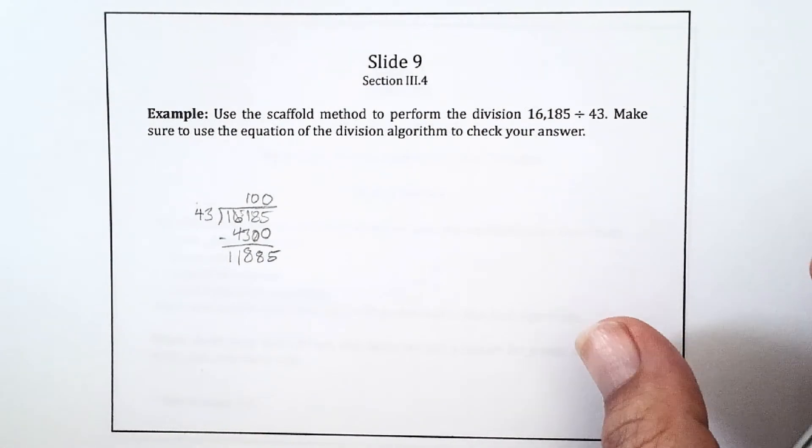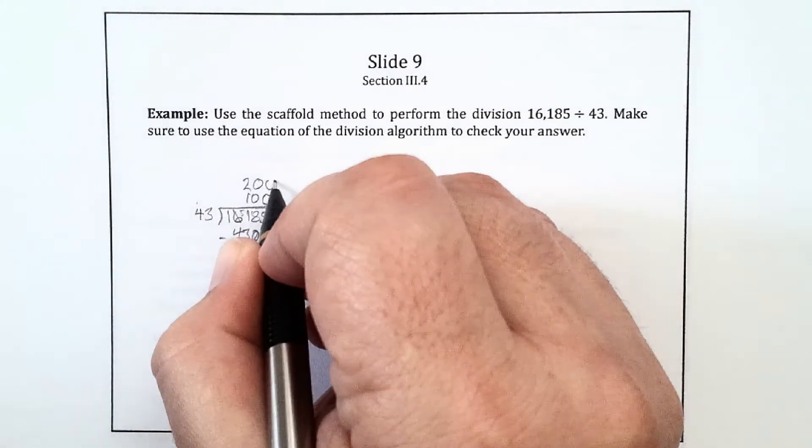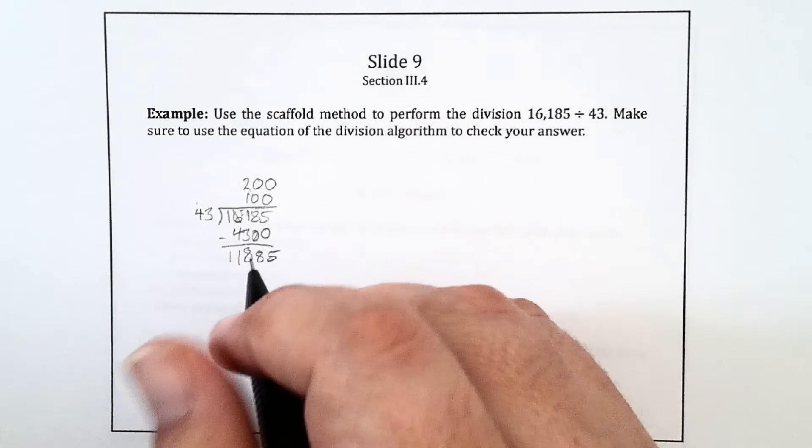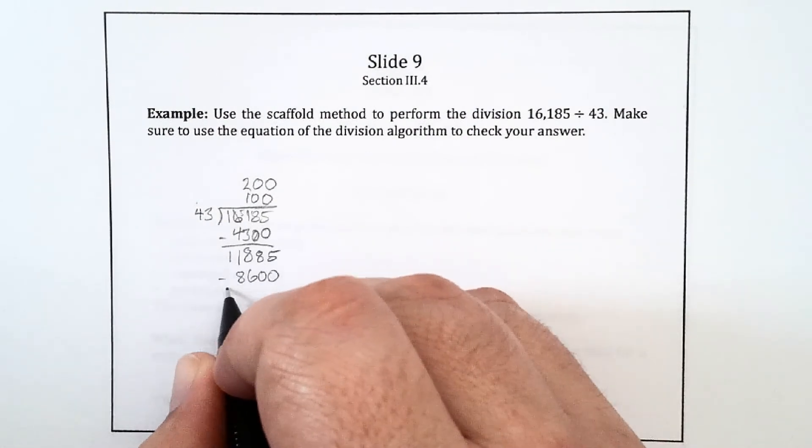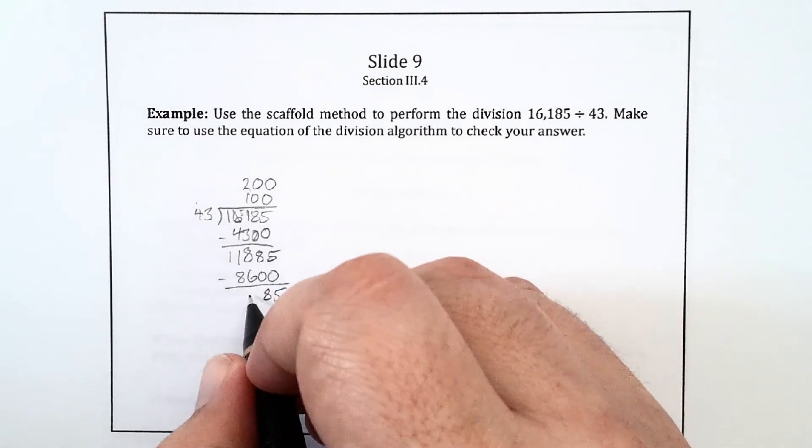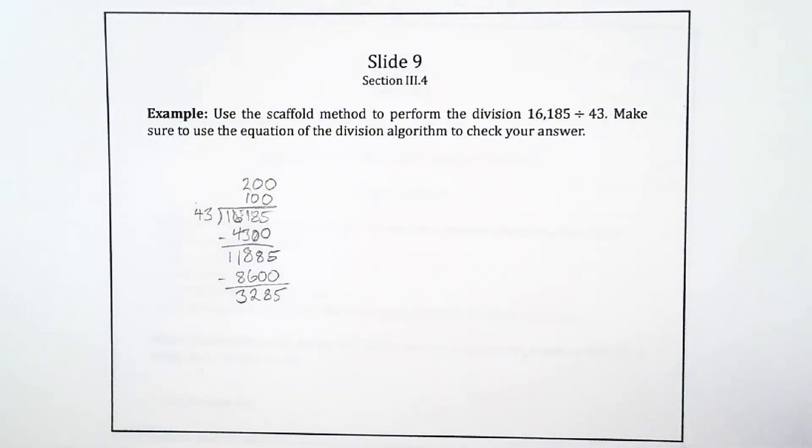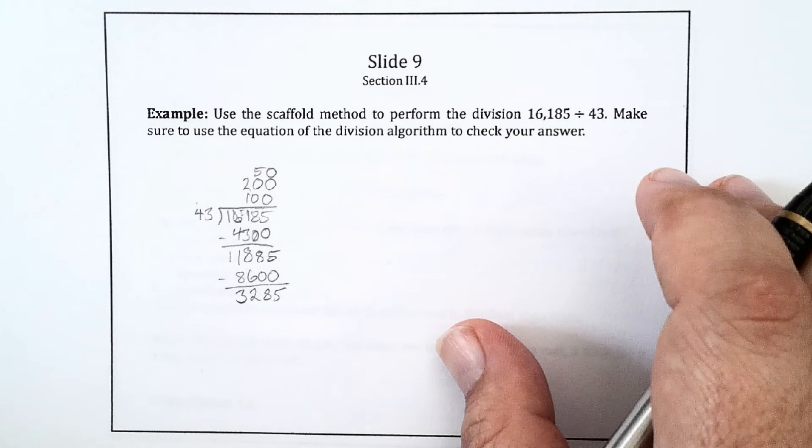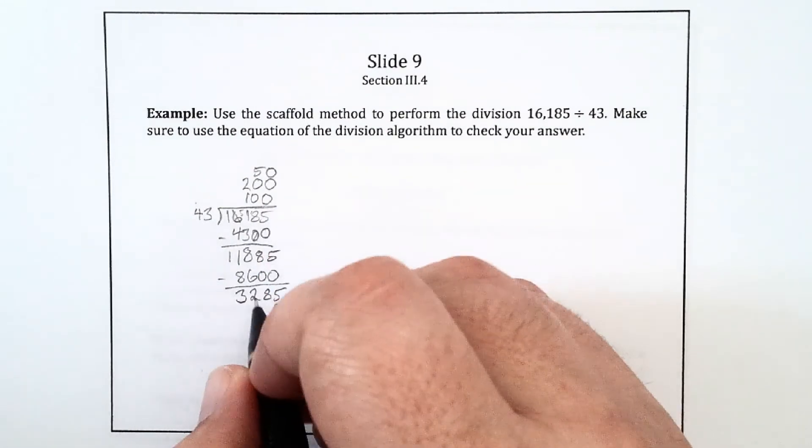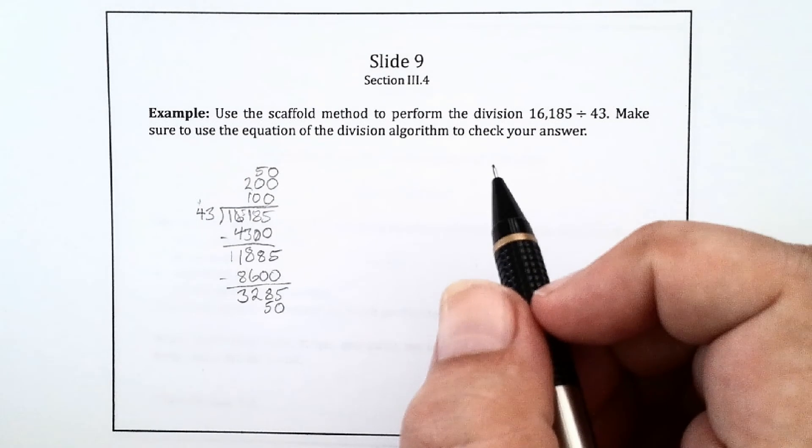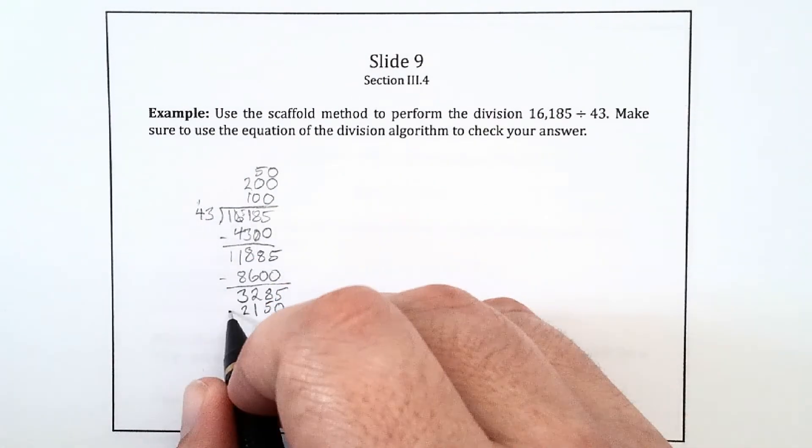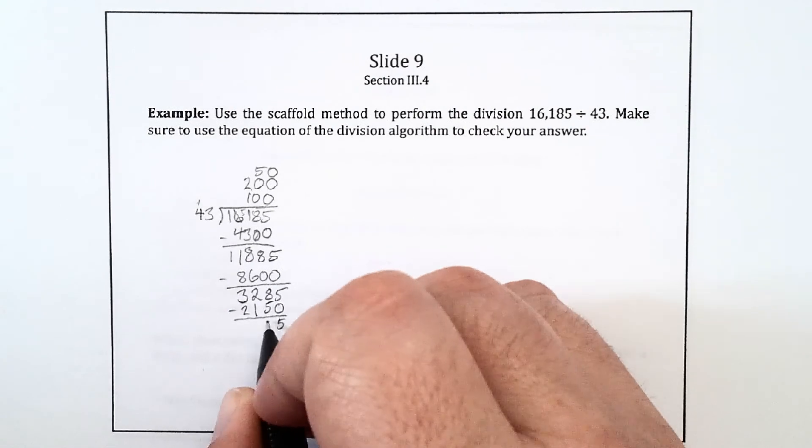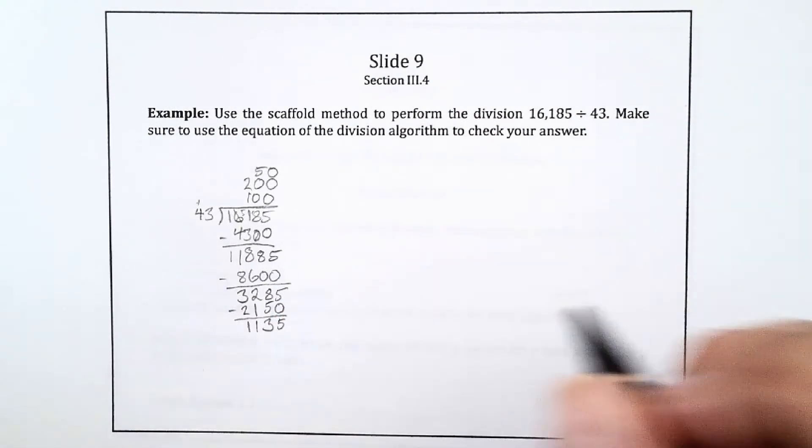Based on that last step, it's pretty easy to see at this point that I could fit in another 200 43s. So 200 times 43 is 8,600. Take that away, I get 3,285. Clearly I can't take away another 100, so let me try 50. 50 times 43 is 2,150, which leaves 1,135.